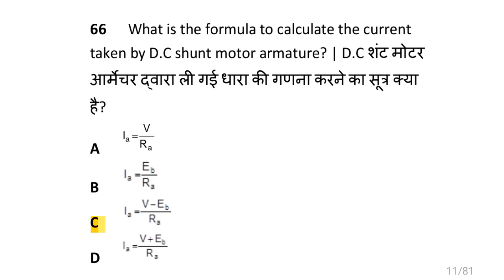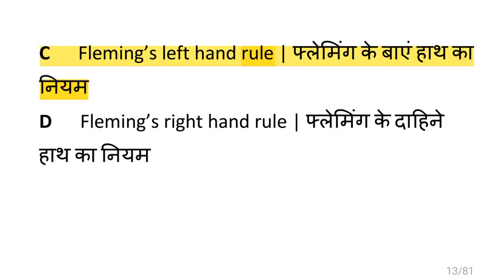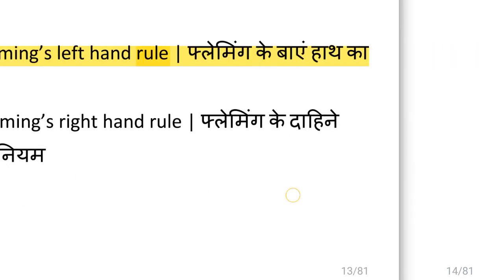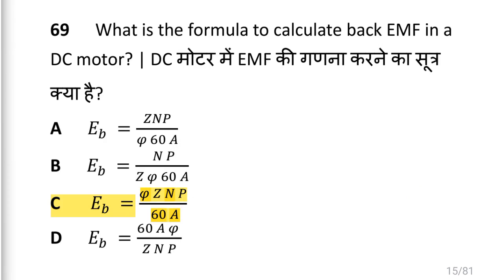Which rule is applied to identify the direction of flux in DC motor? That is Fleming's left hand rule. Name the type of DC motor. That is short shunt compound motor.